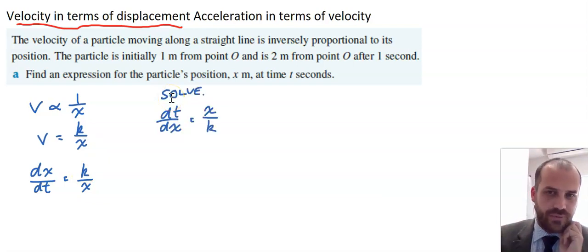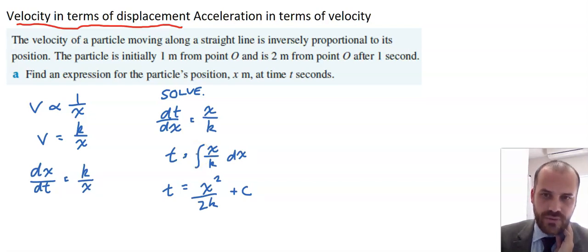To solve it, I'm just going to flip the differential equation. So dt/dx instead of dx/dt, and then move from there. Finding the integral of x on k, that's going to be x squared over 2k. And don't forget your little plus c on the end.